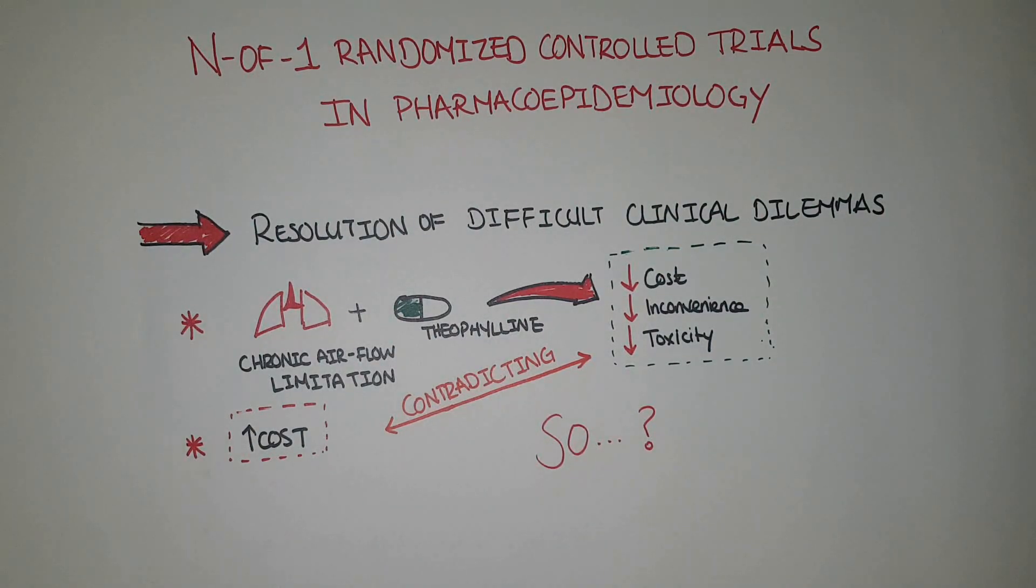While N-of-1 RCTs can be feasible, highly informative, and stimulating, full implementation of this method is unlikely to become a major part of clinical practice. Yet, some principles can be incorporated into clinical practice, such as repeated withdrawal and reintroduction of medication in an open and unmasked fashion. The N-of-1 randomized controlled trial has the potential to improve the quality of medical care and the judicious use of expensive and potentially toxic medication in patients with chronic disease.